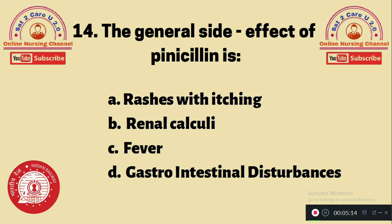Question 14: The general side effect of penicillin is — A. Rashes with itching, B. Renal calculi, C. Fever, D. Gastrointestinal disturbances. The most common side effect of penicillin is rashes with itching — option A. Pruritus is the most common side effect of penicillin.